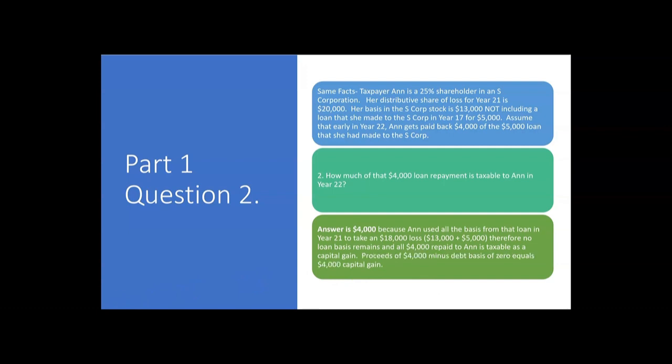It's going to be treated like this: proceeds of $4,000 minus debt basis of zero equals a $4,000 capital gain. And if she would have gotten all $5,000 back that was owed to her, it would have been a $5,000 capital gain. So let's say in year 23, she gets that last $1,000 paid back to her from that debt. Because remember, she had a $5,000 loan and she's got $4,000 back now. If she gets the other $1,000 in year 23, she'll have a $1,000 capital gain in year 23.